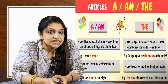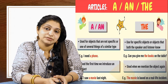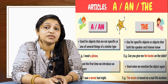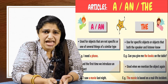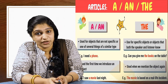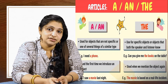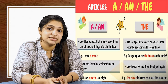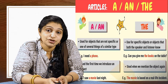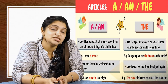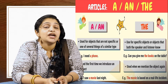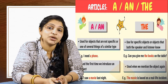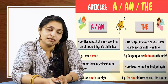Then comes the indefinite article — A and An. They are used when the speaker believes that the listener does not need to know the specific identity of the referent. It may be any: a boy — any boy, a girl — any girl, a book — some kind of a book. You don't have to reveal the identity of the referent to your listener. Here you have plenty of examples to comprehend the differences between definite and indefinite articles.